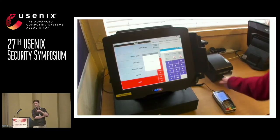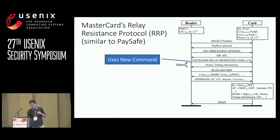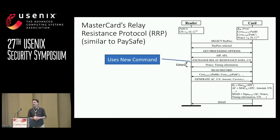There are currently lots of designs to stop this, but no actual implementations. MasterCard have a system which introduces a new command that does a very fast nonce exchange without any crypto, which can be timed accurately to detect a relay. The crypto comes later after this time step. Putting in a time bound can actively stop these attacks.